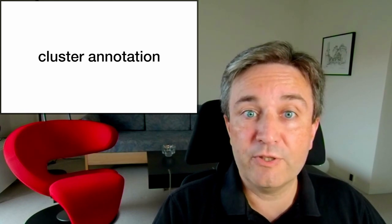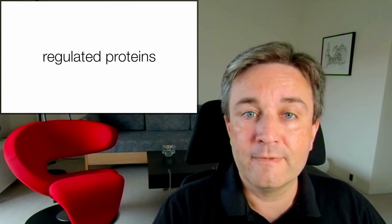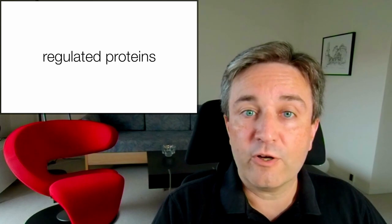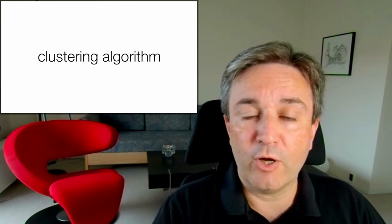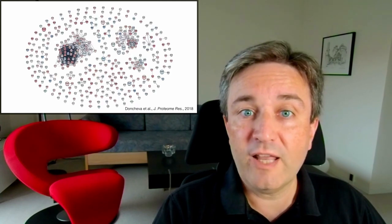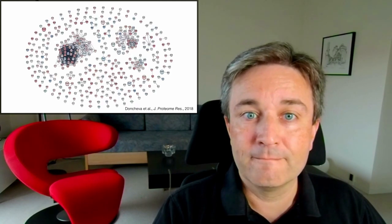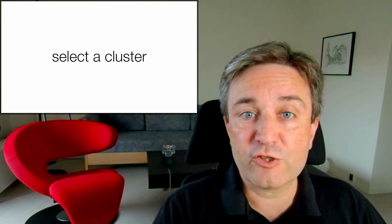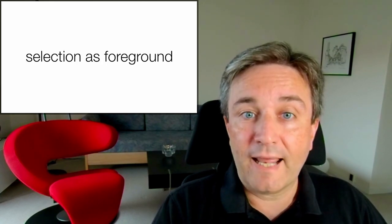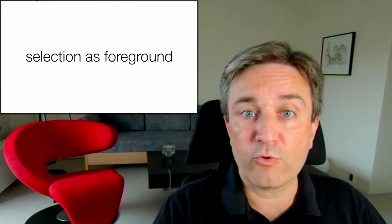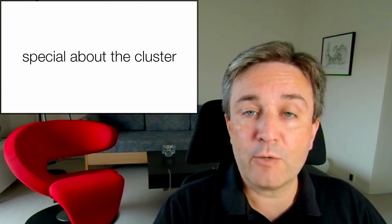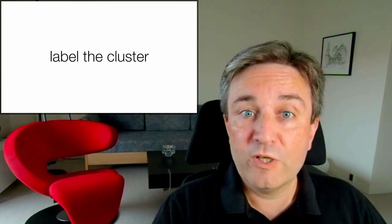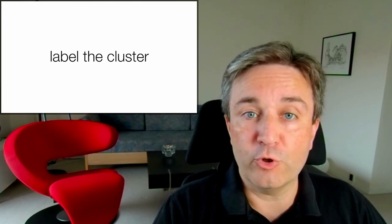A similar approach can be used to annotate clusters. If you have your network of regulated proteins from before and you've run a clustering algorithm on it to break it into functional modules, you'll have a network that looks like this. You can now select a cluster and run enrichment analysis using the selection as foreground and the whole network as background. That way you find out what's special about the cluster, which can suggest which label you should put on it.